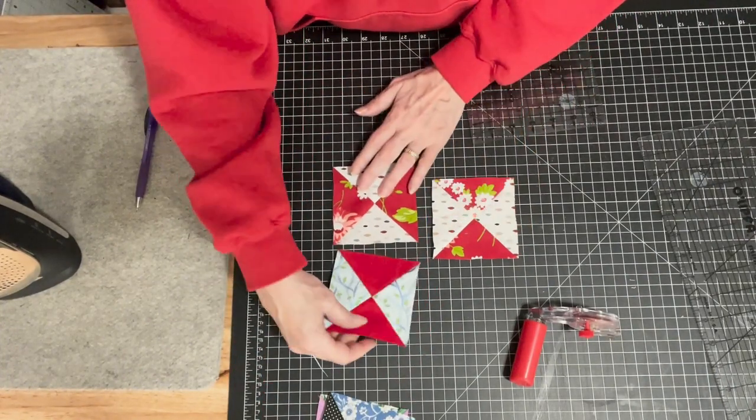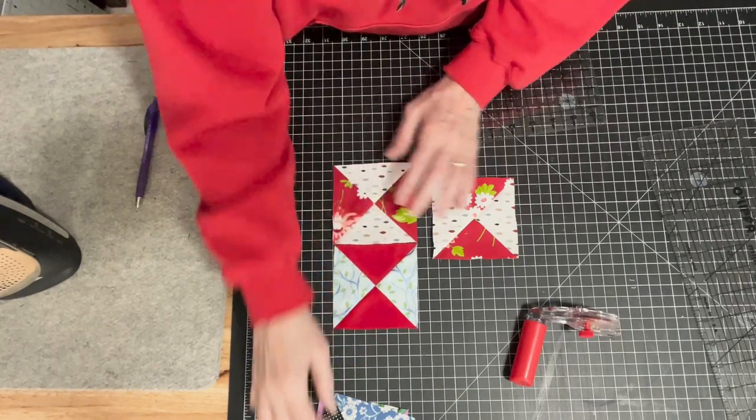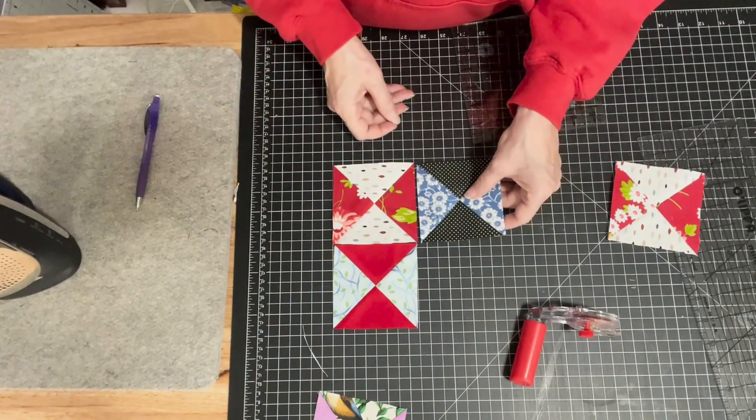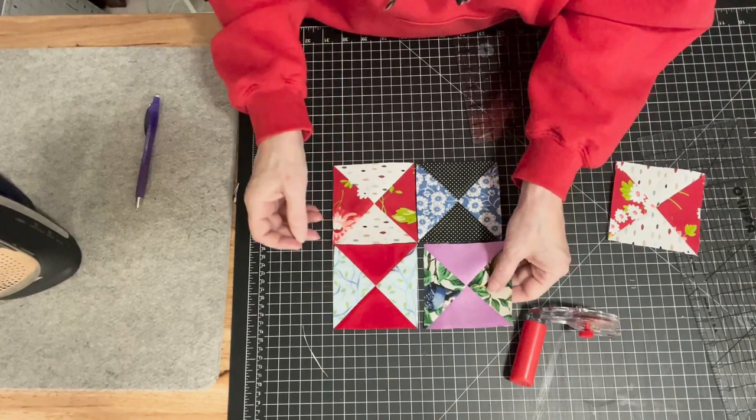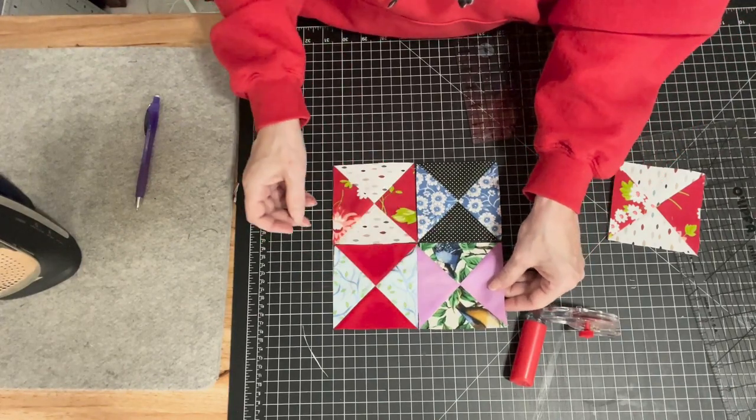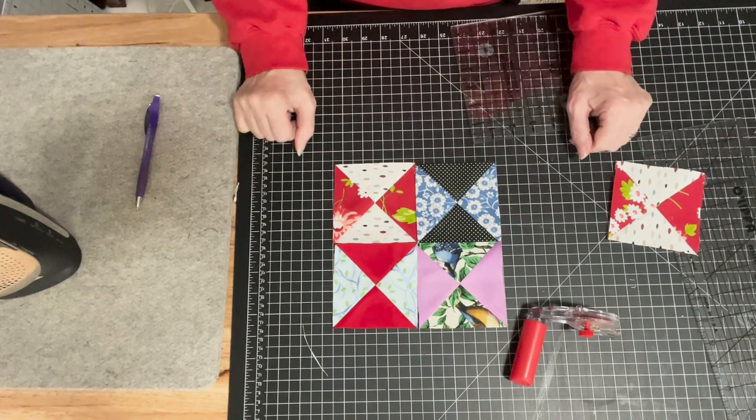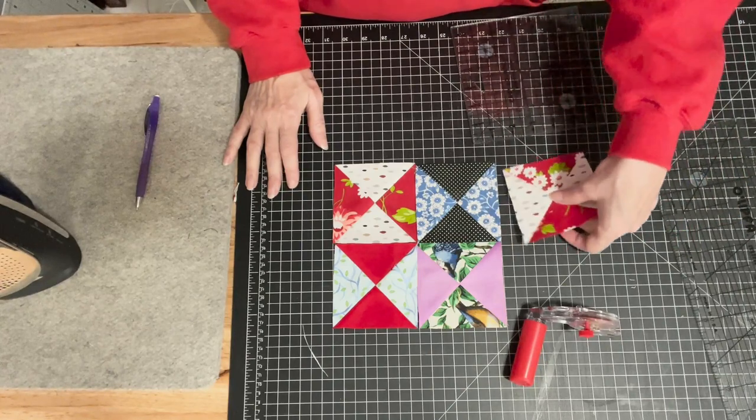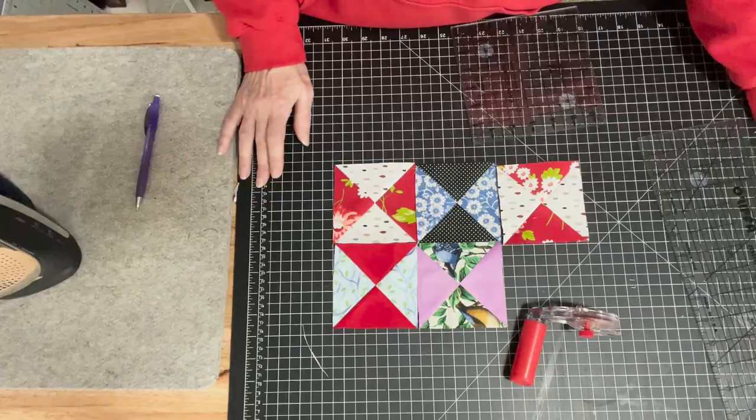I'm just going to do that to a bunch of my five-inch squares. When I put them together, I'm going to alternate the lights and the darks, and it's going to create this really cute little secondary pattern.